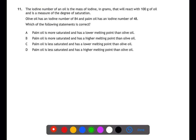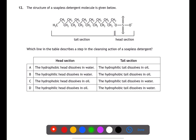The iodine number of an oil is the mass of iodine in grams that will react with 100 grams of oil, and is a measure of the degree of unsaturation. The higher the iodine number, the more unsaturation there is. Olive oil has an iodine number of 84 and palm oil has an iodine number of 48. This means that palm oil has fewer carbon-to-carbon double bonds and is therefore more saturated than olive oil. Because it is more saturated it can pack closer together and have stronger van der Waals forces, giving it a higher melting point. Therefore B will be the answer.